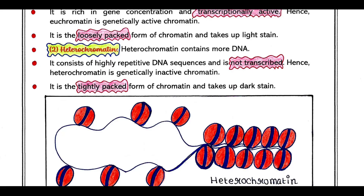Heterochromatin contains more DNA and it consists of highly repetitive DNA sequences and is not transcribed. Hence heterochromatin is genetically inactive chromatin. The DNA present in the heterochromatin is not getting transcribed, that's why it is called genetically inactive chromatin, and it is very much tightly packed.